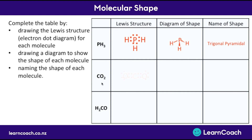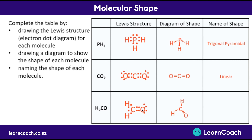For CO2, carbon shares two sets of electrons with each oxygen. There are only two bonds, which means it must be straight, and we draw the double bonds — no 3D required. This is a linear shape, meaning a straight line. For H2CO3, there's a central carbon with three different bonding pairs. Because it has three pairs we don't need any 3D. We draw the double-bonded oxygen and two single-bonded oxygens approximately 120 degrees apart. This is called trigonal planar — a triangle on a flat plane.